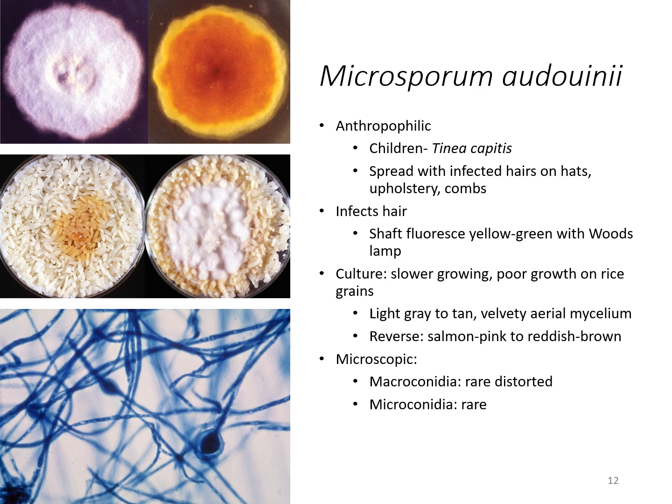The culture is slow growing with very poor growth on rice grains. You can see the Microsporium audouinii growing — it just leaves a brownish color and doesn't grow like other Microsporium species. The culture itself can be light gray to tan, very velvety, with that little fluffy type look. The reverse side is salmon pink to reddish brown.